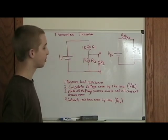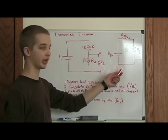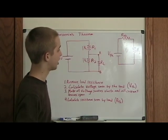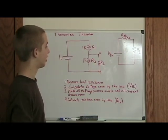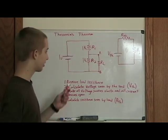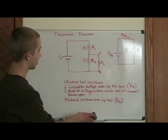Okay, so here's the circuit I want to simplify. And this is what I want to try to make it look like. You can see Thevenin's voltage and Thevenin's resistance, and then there's the load resistor right there. So the first step to simplifying this circuit is to remove the load resistance.